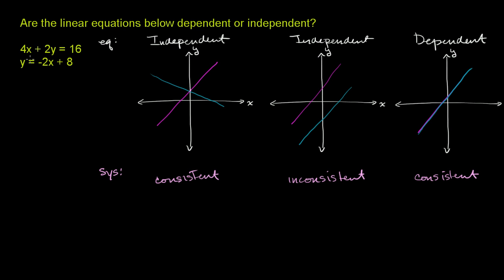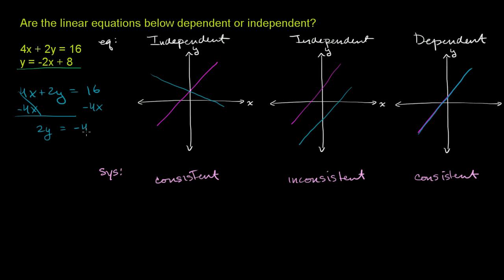The best way is to put both equations in the exact same form. The second equation is already in mx + b form. Let's put the top equation — 4x + 2y = 16 — in mx + b form. Subtracting 4x from both sides: on the left we're left with 2y, and on the right, negative 4x plus 16.